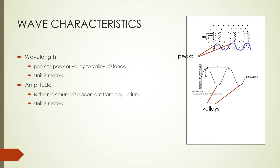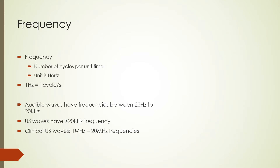The frequency is the number of cycles per unit time. The unit of frequency is the hertz, and one hertz is one cycle per second. Frequency is the inverse of the period, or the time for one cycle. A sound wave with a frequency between about 20 Hz and 20,000 Hz is audible to the human ear. An ultrasound or ultrasonic wave has a frequency greater than 20,000 Hz and is not audible to the human ear. In clinical diagnosis, ultrasound waves of frequencies between 1 MHz and 20 MHz are used.